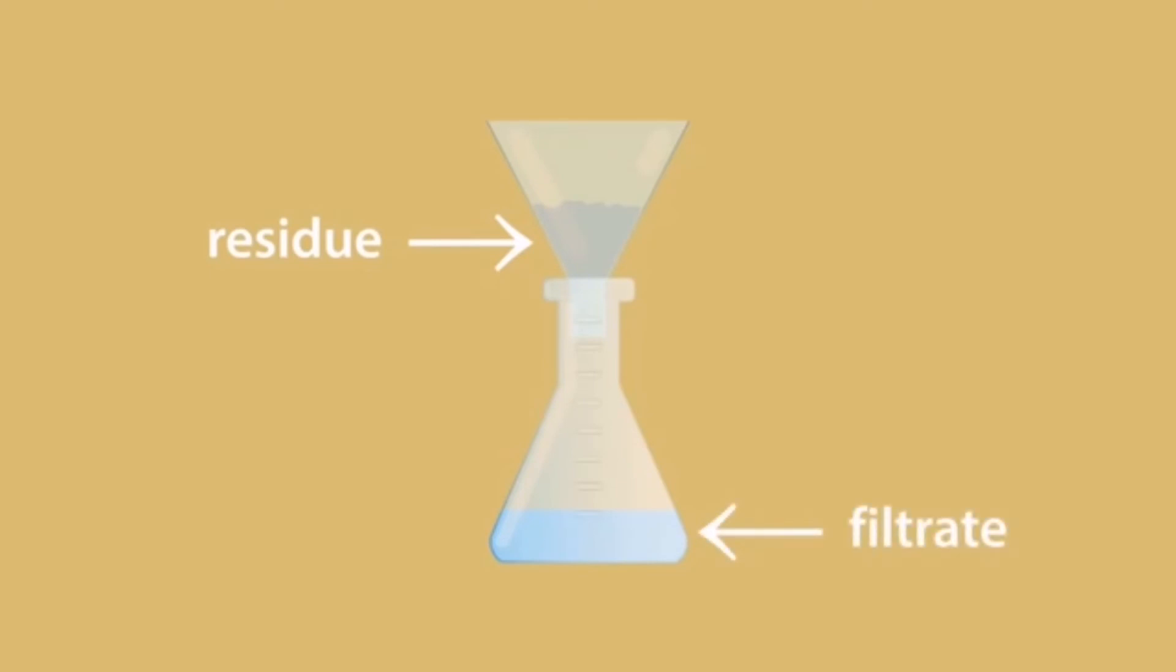The substance that remains on the filter paper is known as the residue, and the substance collected in the flask is called the filtrate. For this case, sand is the residue and the salt water is the filtrate. The salt can be obtained using evaporation and the sand left to dry.